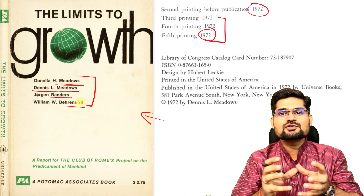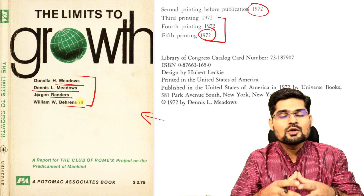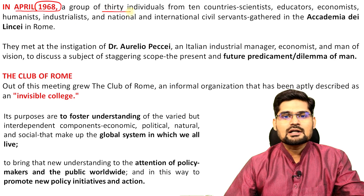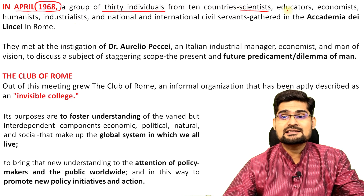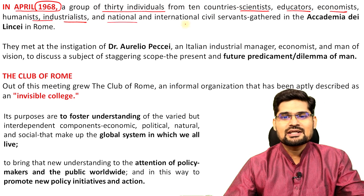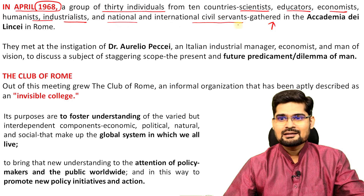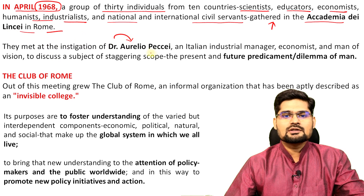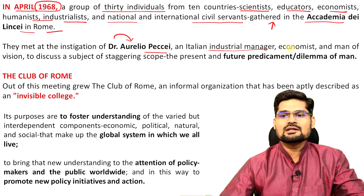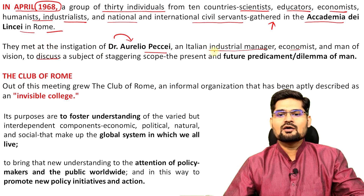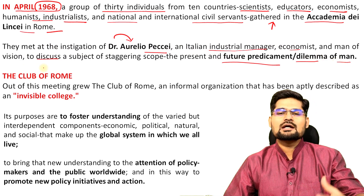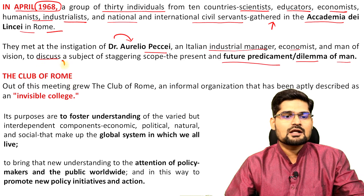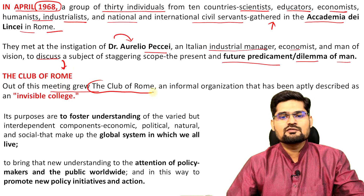What is this limits to growth? The growth happening in society post World War II was discussed. In April 1968, a group of about 30 individuals from 10 different countries — scientists, educators, economists, humanists, industrialists, national and international civil servants — gathered together at Academia di Linche in Rome. When they gathered in Rome, they met Dr. Aurelio Peccei, an industrial manager, economist and man of vision who led into this idea of the future predicament and dilemmas of humanity.